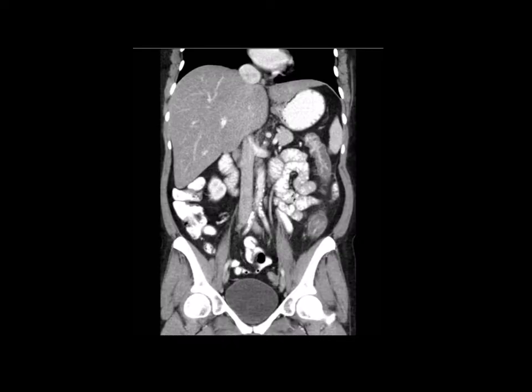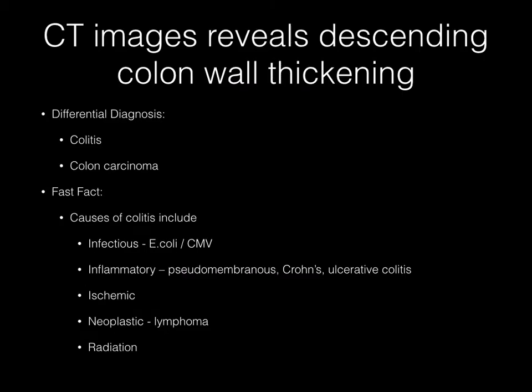Now pause your media player. Coronal CT image of the abdomen demonstrates descending colonic wall thickening. The differential diagnosis here includes colitis, which I would favor in this case due to the long segment that is involved, as well as colon carcinoma.